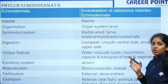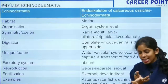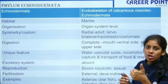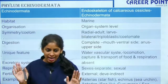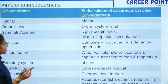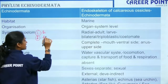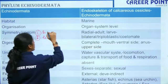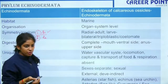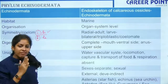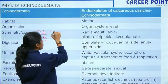Next is Echinodermata. They have spines on their body due to the endoskeleton of calcareous ossicles. Organ system level, triploblastic, coelomate — everything is fine, but there is a small twist: ideally, from Platyhelminthes onwards everything has bilateral symmetry, but in Echinodermata the larva has bilateral symmetry while the adult has radial symmetry — going back in development. This type of development is called retrograde development.